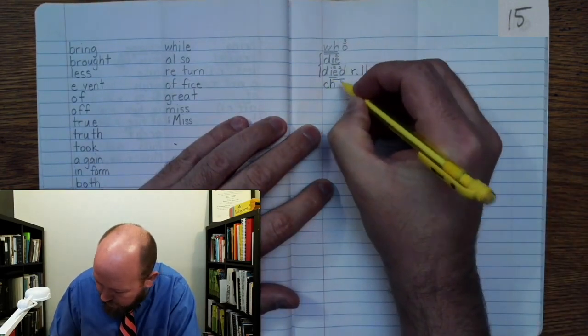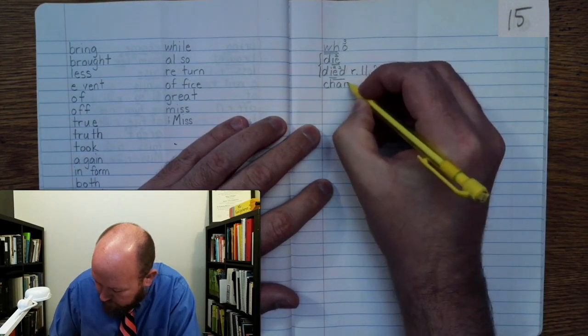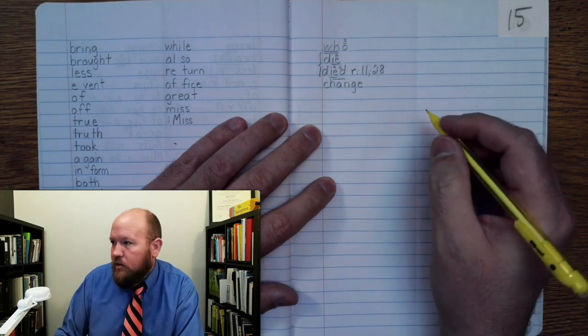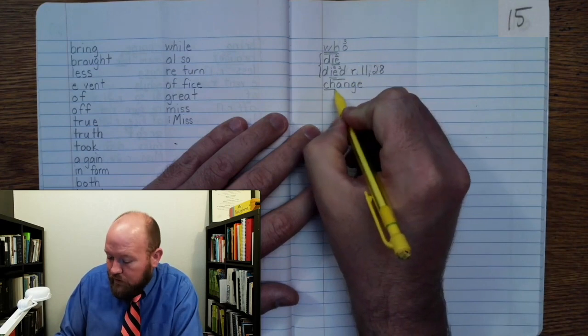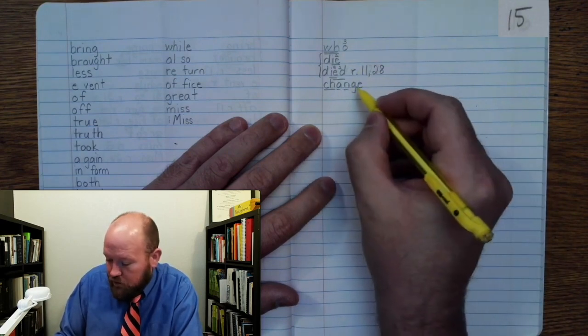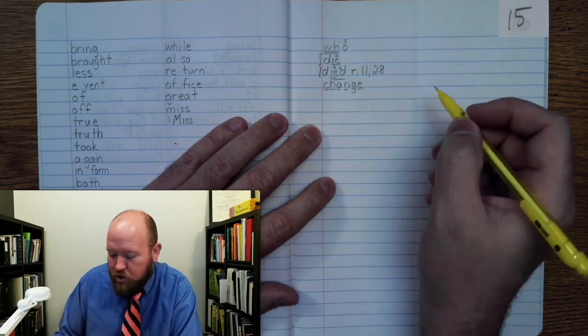Change: C-H-A-N-J-E. Markings: CH once, A once, N once, J once, E once. Change.